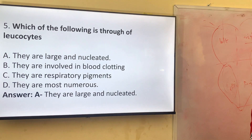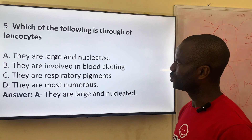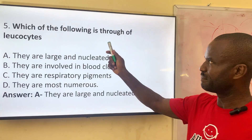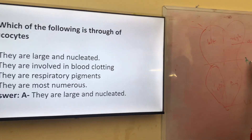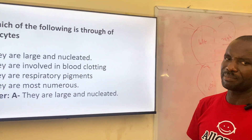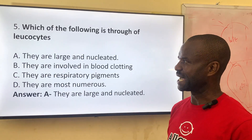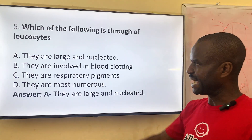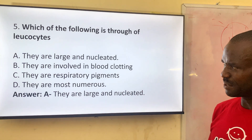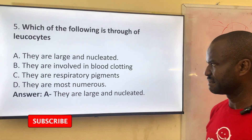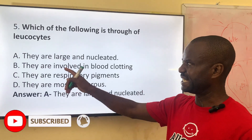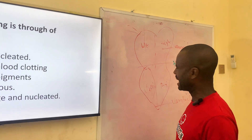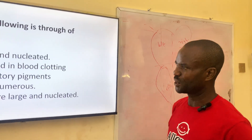Question five: which of the following is true of leukocytes? Leukocytes are white blood cells. Option A: they are large and nucleated. Option B: they are involved in blood clotting. Option C: they are respiratory pigments. Option D: they are most numerous. The correct answer is A — they are large and nucleated. White blood cells have a nucleus; they are quite larger than red blood cells, and nucleated means they have a nucleus in them.